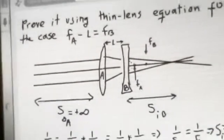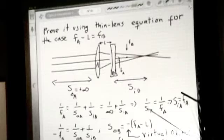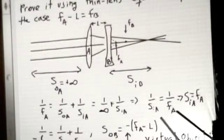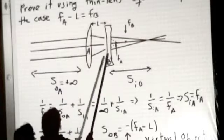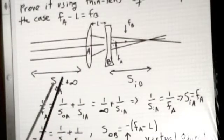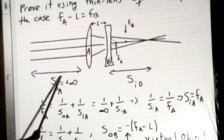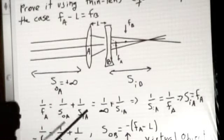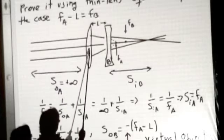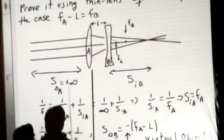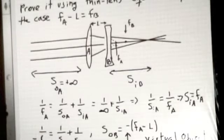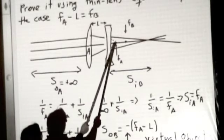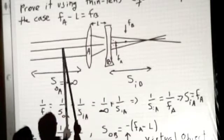We can take a look at that and see if we can deduce it from the equation. The setup is: we have a converging lens and a diverging lens. The light rays are coming in parallel, so I'm going to assume the distance to the object is infinity — the object is very far away from this system of two lenses. We assume the distance between them is L. This is the focal point of lens A, and this is the focal point of lens B.